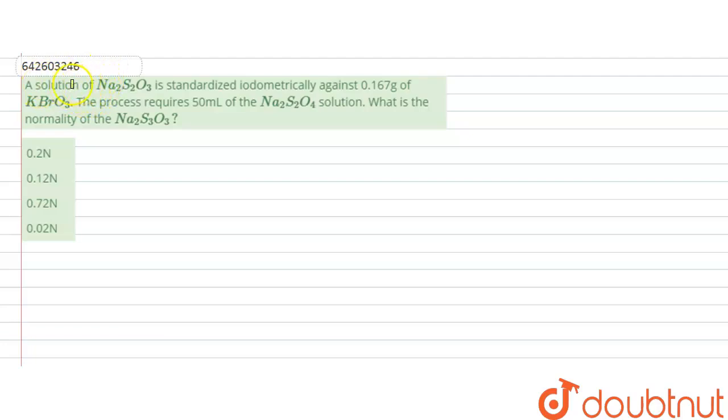The question is: A solution of sodium thiosulfate Na2S2O3 is standardized iodometrically against 0.167 gram of KBrO3. This process requires 50 ml of Na2S2O3 solution. What is the normality of Na2S2O3?